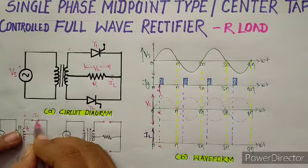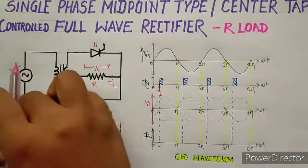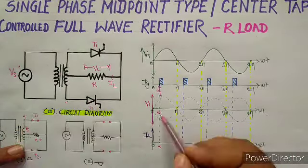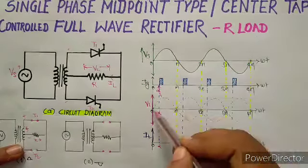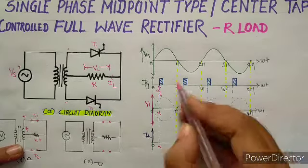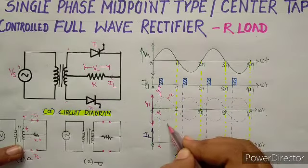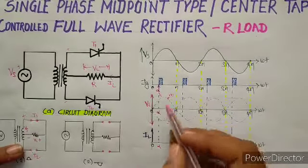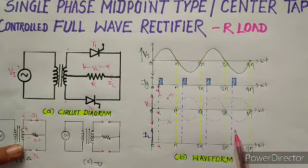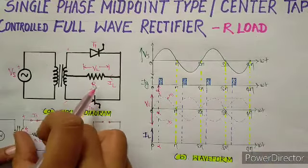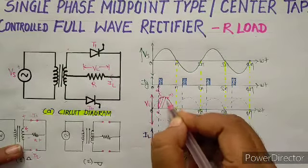जैसे ही T1 की switch ON होगी, input voltage VS किसके across आएगा? Load के across आएगा। Alpha के बाद का जो भी plus VS voltage है, वो load के across आएगा। Load resistive है, इसलिए जैसी voltage की waveform होगी, वैसी ही current की waveform होगी। 0 से alpha तक load voltage और load current दोनों 0 थे। Alpha के बाद T1 ON होने पर input voltage will appear across the load।